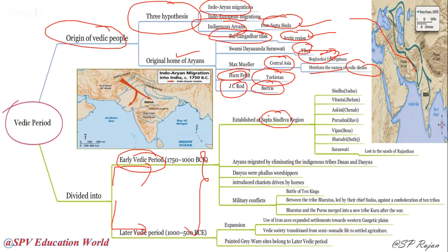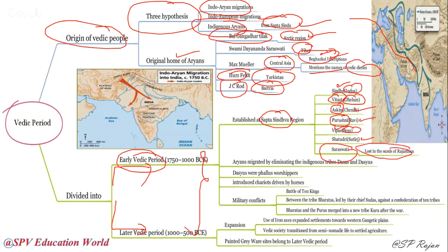Early Vedic age was established along the Sapta Sindhu region — mostly along the Indus and Gangetic plains. The rivers: Sindhu is another name for Indus; Vitastha is another name for Jhelum; Askini is another name for Chenab; Purushni is another name for Ravi; Vipas means Beas; Satrudri means Sutlej; and Saraswati, now lost in the sands of Rajasthan, is being re-excavated by archaeologists.